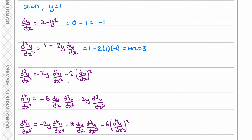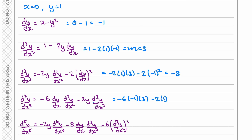For the third derivative, we have negative 2 times y times the second derivative minus 2 times (dy/dx)², which evaluates to negative 8. For the fourth derivative, we have negative 6 times dy/dx times d²y/dx² minus 2 times y times d³y/dx³, using the value negative 8, giving us 34. For the fifth derivative, using negative 2, 1, 34, and negative 6 times 3 squared, we get negative 186.